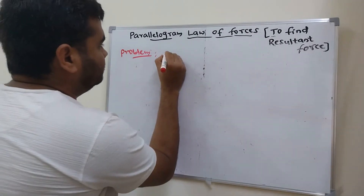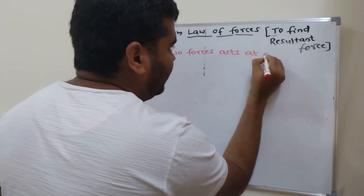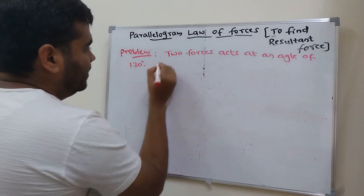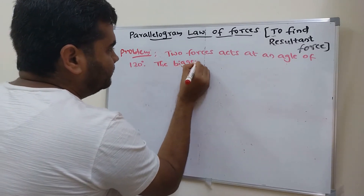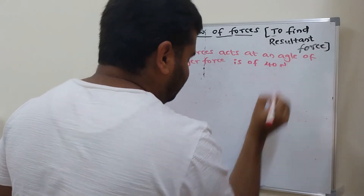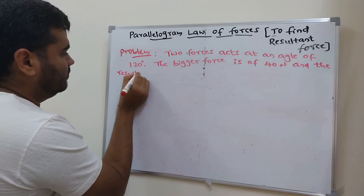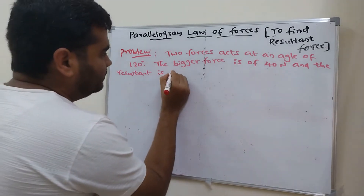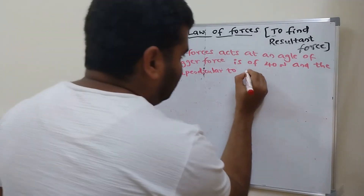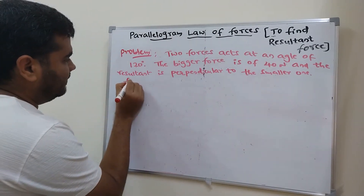Two forces act at an angle of 120 degrees. The bigger force is of 40 Newton, and the resultant is perpendicular to the smaller one. Find the smaller force.